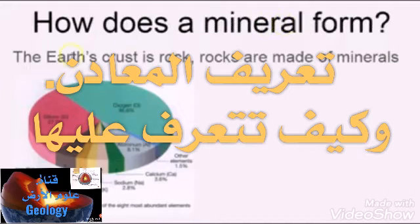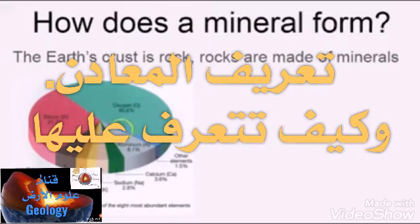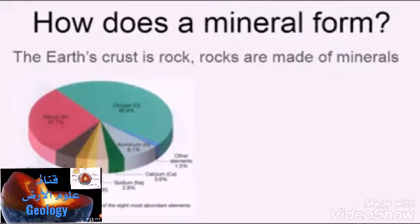So how does a mineral form? The earth's crust is rock, and rocks are made of minerals. You'll find that there are eight primary, very abundant elements that make up the majority of all of the rocks on earth, so we'll explore further.